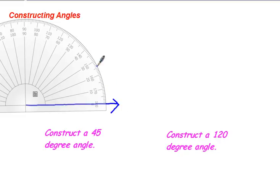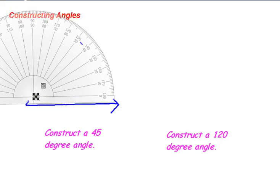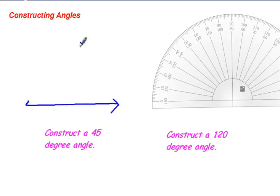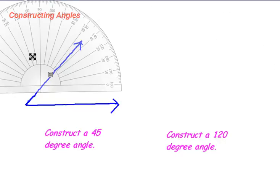Ten, twenty, thirty, forty. Put a dot right by the forty-five. Use your straight edge and connect your vertex with your dot. You can move your protractor if you need to. Connect your dot and your vertex, and put the arrows on your rays.